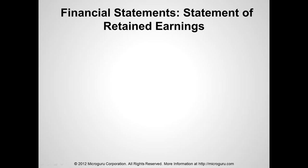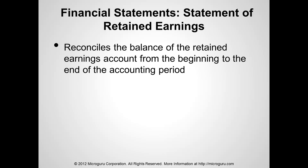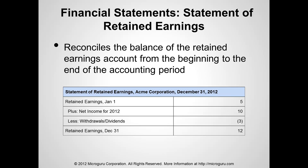Another common statement is the statement of retained earnings. This reconciles the balance of the retained earnings account from the beginning of the year to the end of the year. For ACME Corporation for the year ended December 31, 2012: retained earnings started at $5, the company earned $10 for the year, owners received dividends of $3, resulting in an ending retained earnings balance of $12.